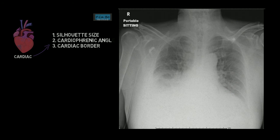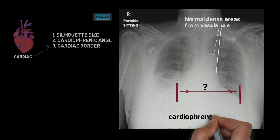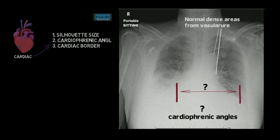Let's look back at this picture. Remember there are three areas to review when looking at the cardiac structures: the silhouette size, the cardiophrenic angles, and the cardiac border or edges. In this picture, the size looks large, although it's hard to tell due to the amount of consolidation. It's obvious the cardiophrenic angles are not visible. As previously mentioned, this patient has pleural effusions, probably pneumonia, and cardiomegaly.